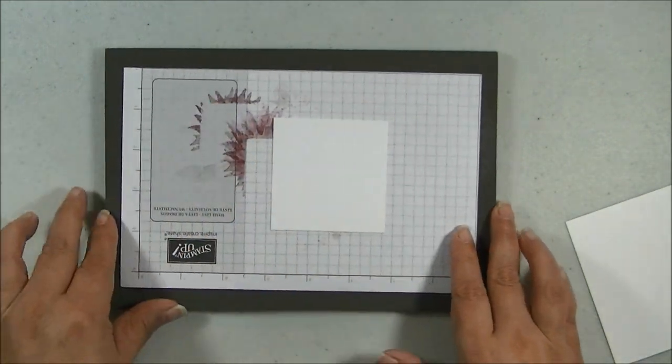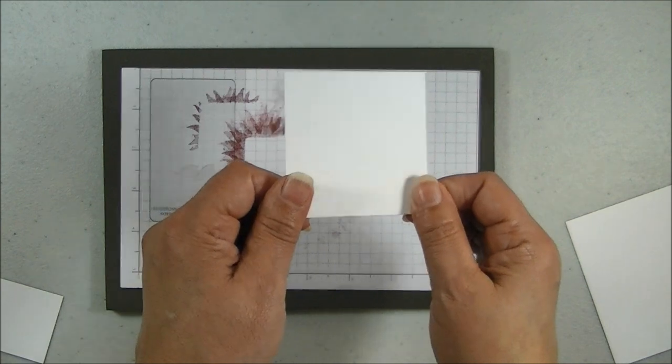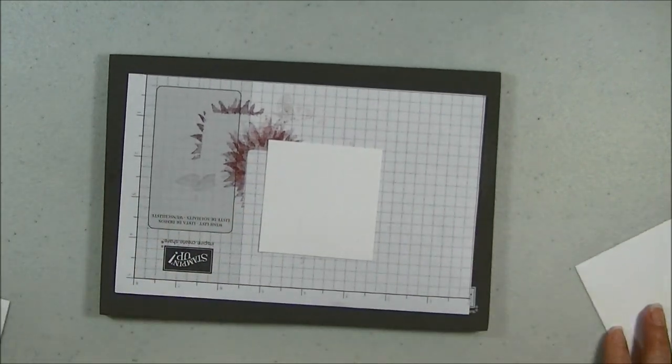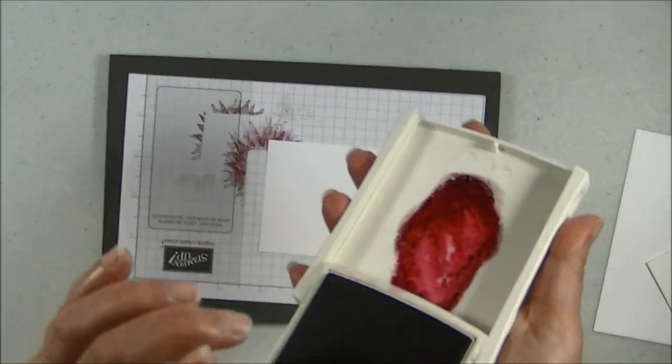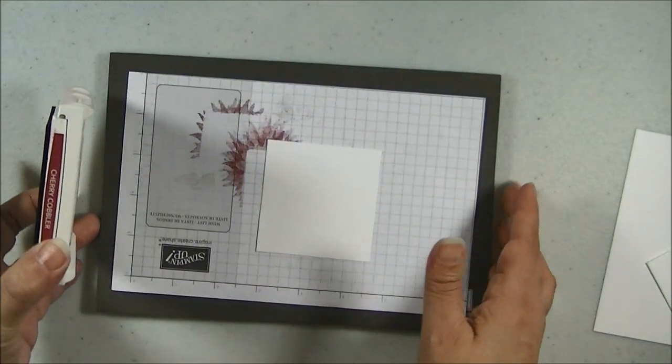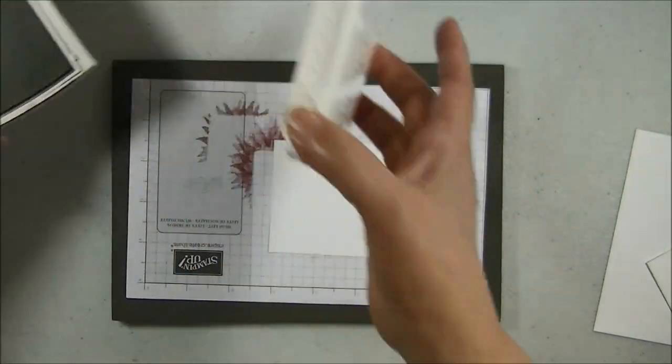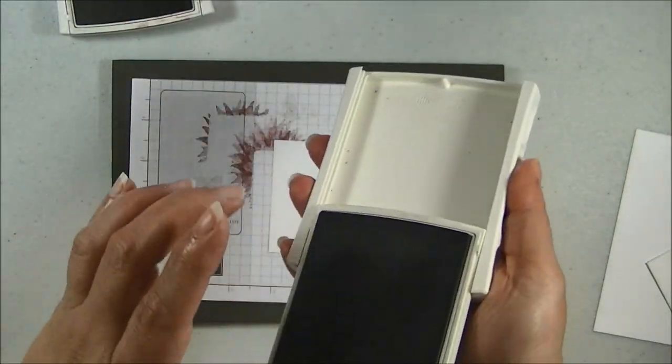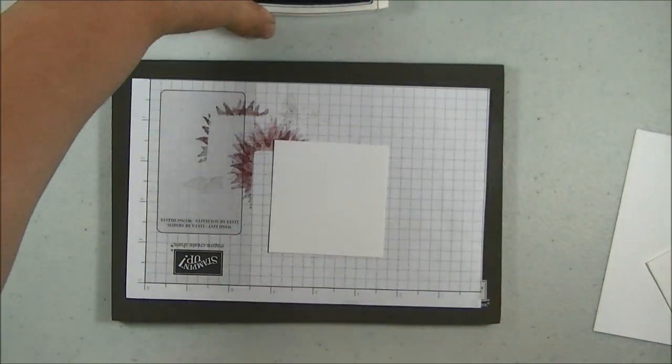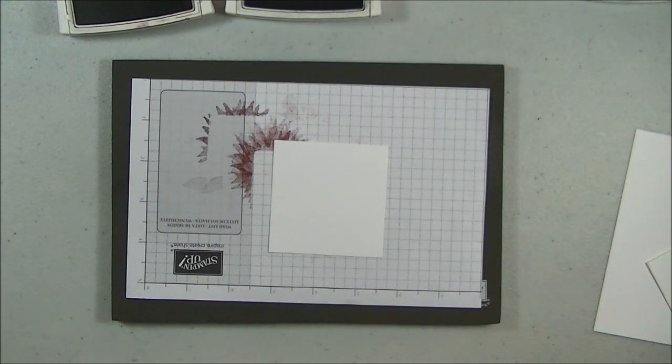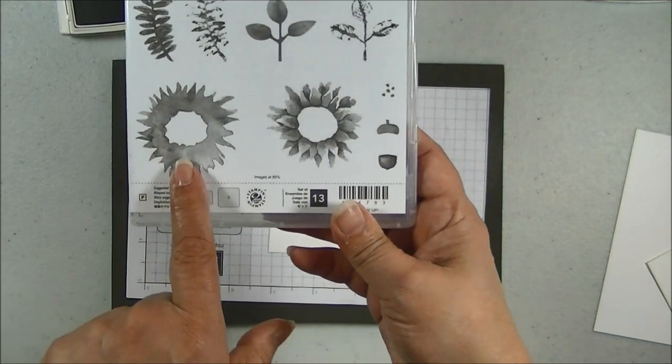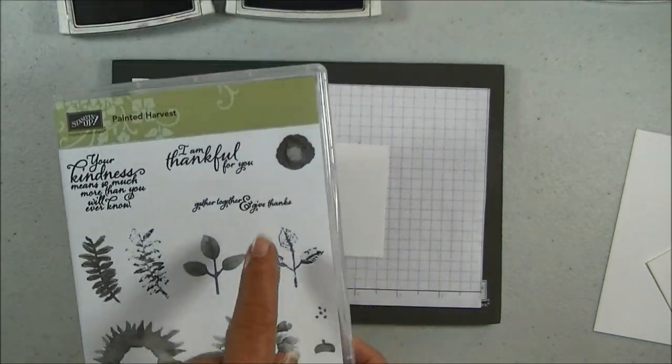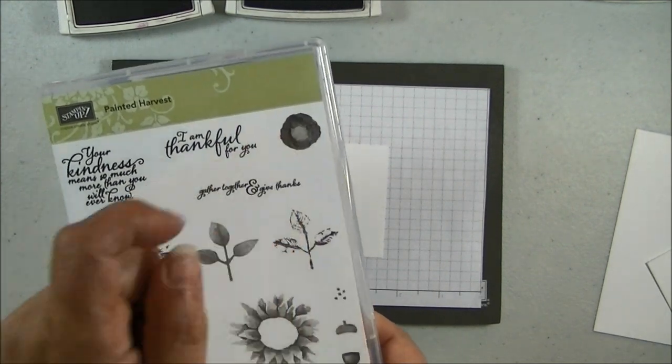So let's start with this 2 3/4 by 2 3/4 piece of paper and our Cherry Cobbler. Let's open that up and get it ready. And our Smokey Slate. And I'm going to show you. We're going to use this stamp here, the stamp here, the stamp here, and the stamp here.